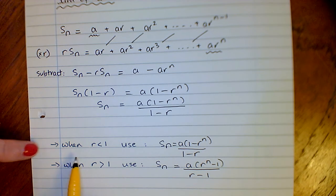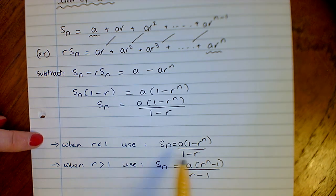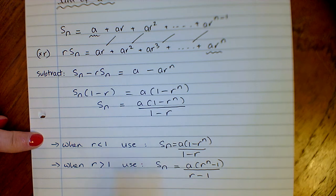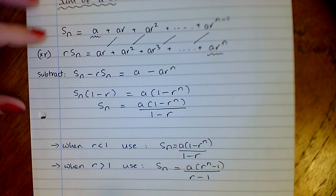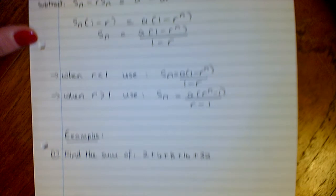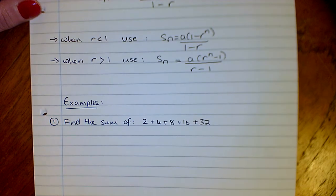There's two formats of this that we can use. There's the one that we proved there, it's easier to use when R is less than 1. If the ratio is greater than 1, it's easier to use this format here. You're just taking out minus signs, but it's just easier to do the R first. So keep that in mind when you're doing the question: is the ratio less than 1 or greater than 1?